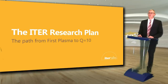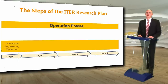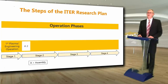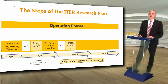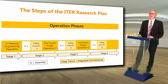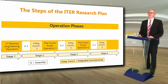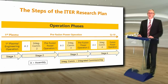Now I'd like to describe in some detail the ITER research plan — the path from first plasma to Q equals 10. The ITER research plan will proceed in four stages, starting with the initial construction and commissioning phase going on now. Then the first plasma and engineering operation phase will be followed by the second assembly and commissioning phase, pre-fusion power operation one, assembly phase three and integrated commissioning three, pre-fusion power operation two, and assembly phase four and integrated commissioning four, before we reach fusion power operation.